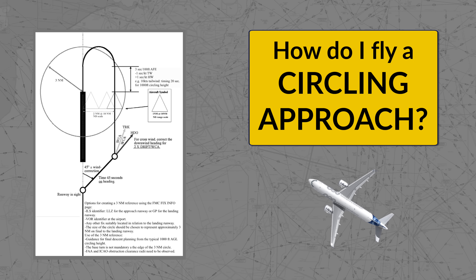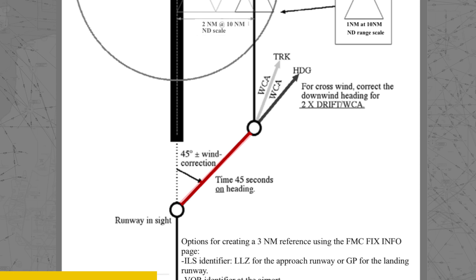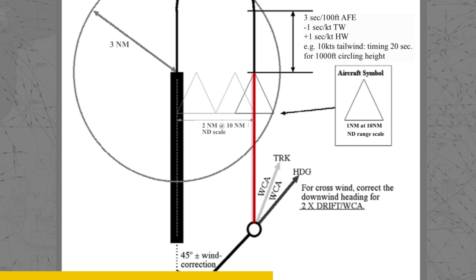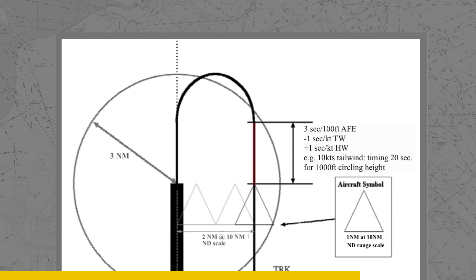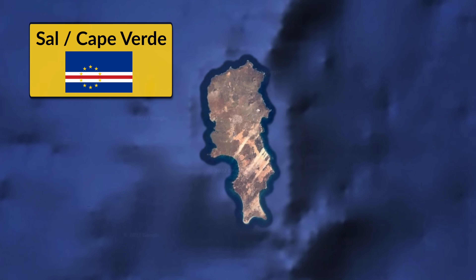To briefly understand the procedure, let me explain the key components of a circling approach in 30 seconds. It's a precision or non-precision approach that switches to a visual segment once you've reached the circling minima and have the runway in sight. At the minima, you perform a 45-degree left or right breakout turn with wind correction angle, fly that track for 45 seconds, then turn downwind plus or minus wind correction angle. Once abeam the landing runway threshold, you fly 30 seconds further outbound, correct for head or tailwind, then perform a standard rate descending turn towards final and use the PAPI to land the aircraft. We'll be performing this procedure at Sal on the island of Cape Verde.